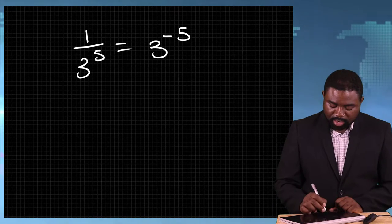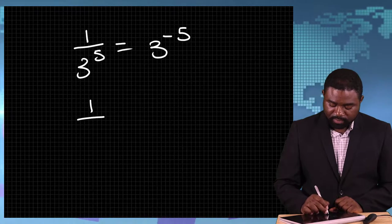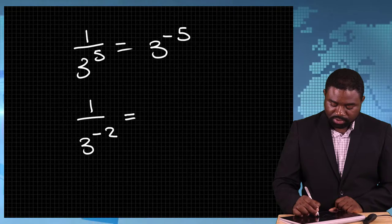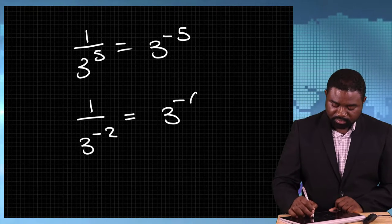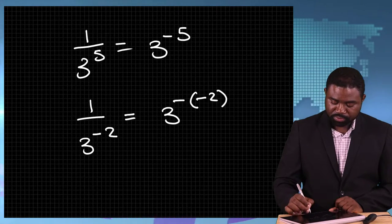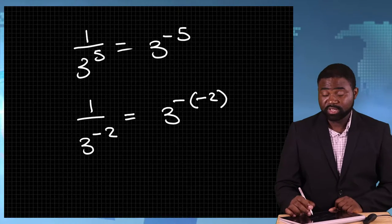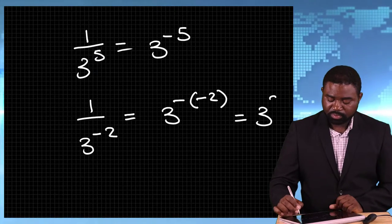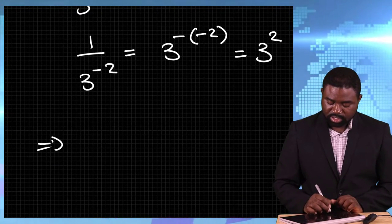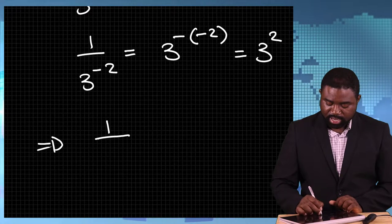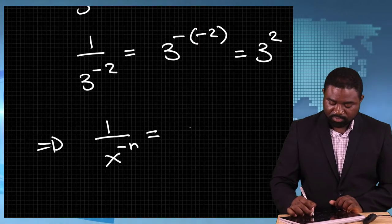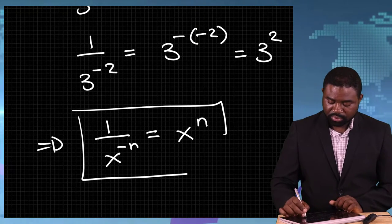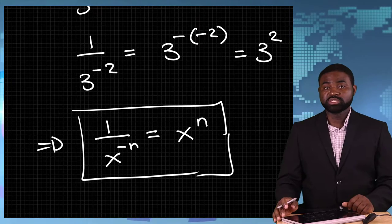So keep in mind that 1 over 3 raised to the power negative 2 is going to be equal to 3 to the power negative bracket negative 2. Negative multiplied by negative gives us positive, so this is just going to be 3 raised to the power 2. In essence, 1 over x raised to the power negative n is just going to be x raised to the power n, which is just the reciprocal of what we did just above.